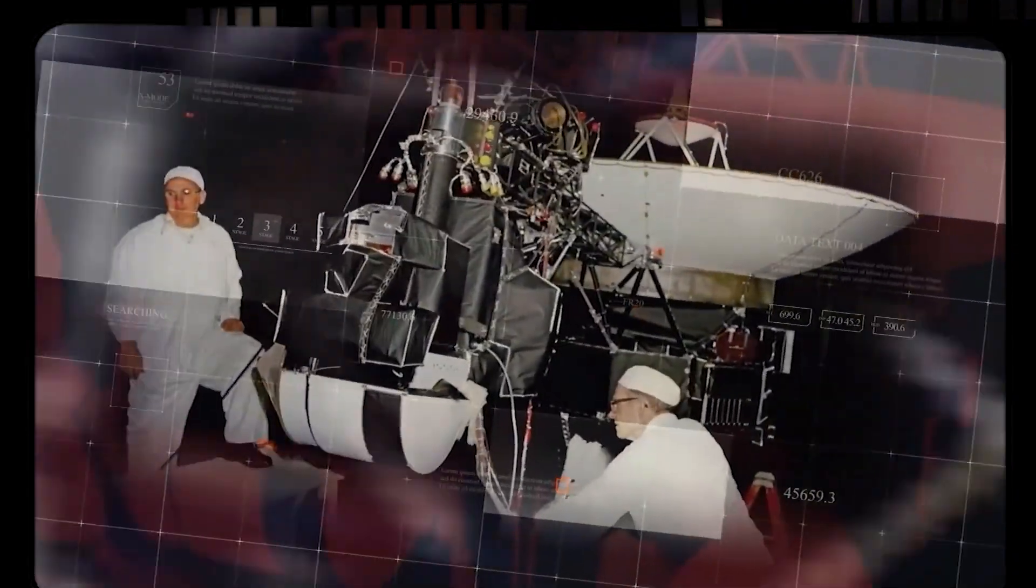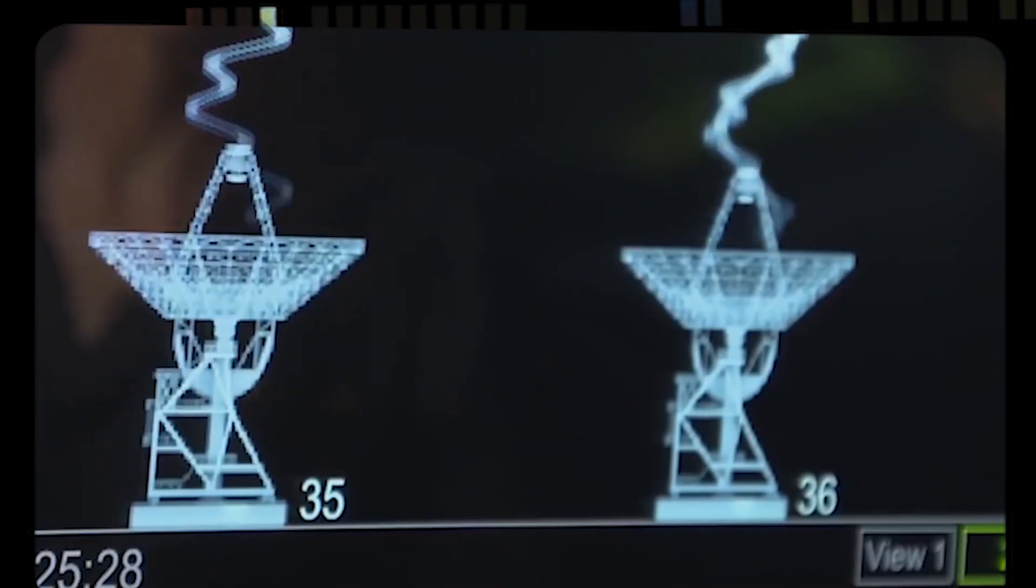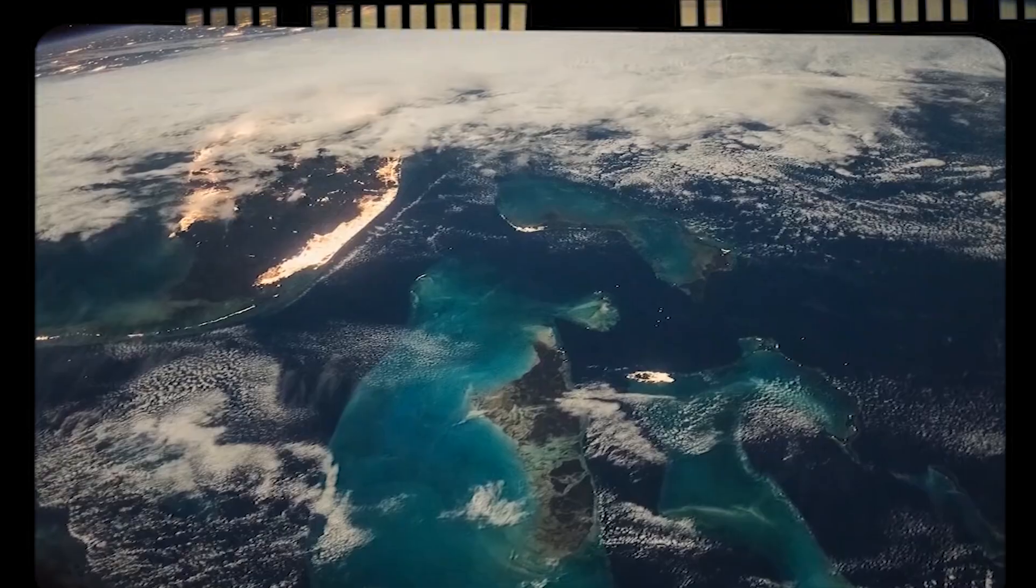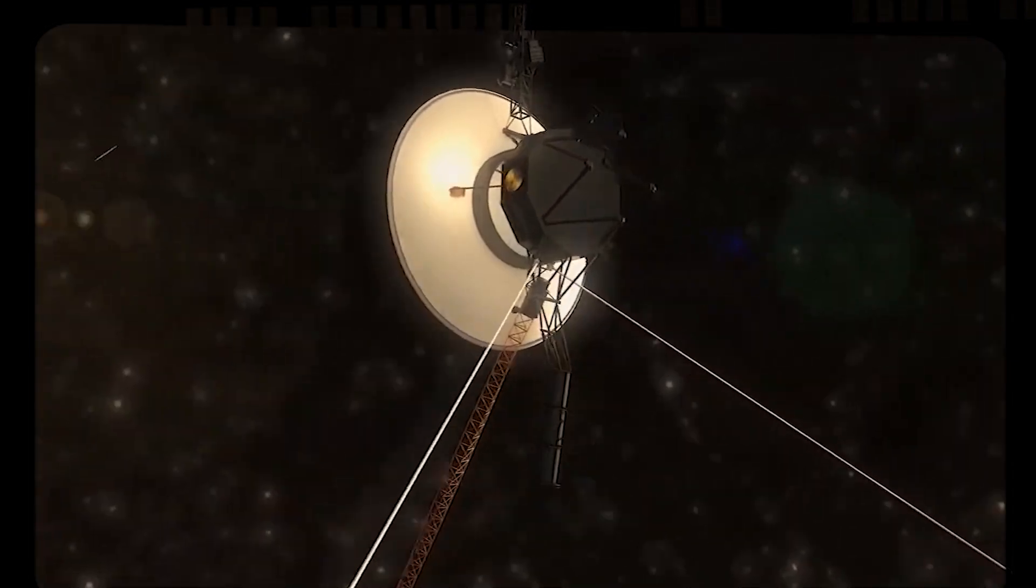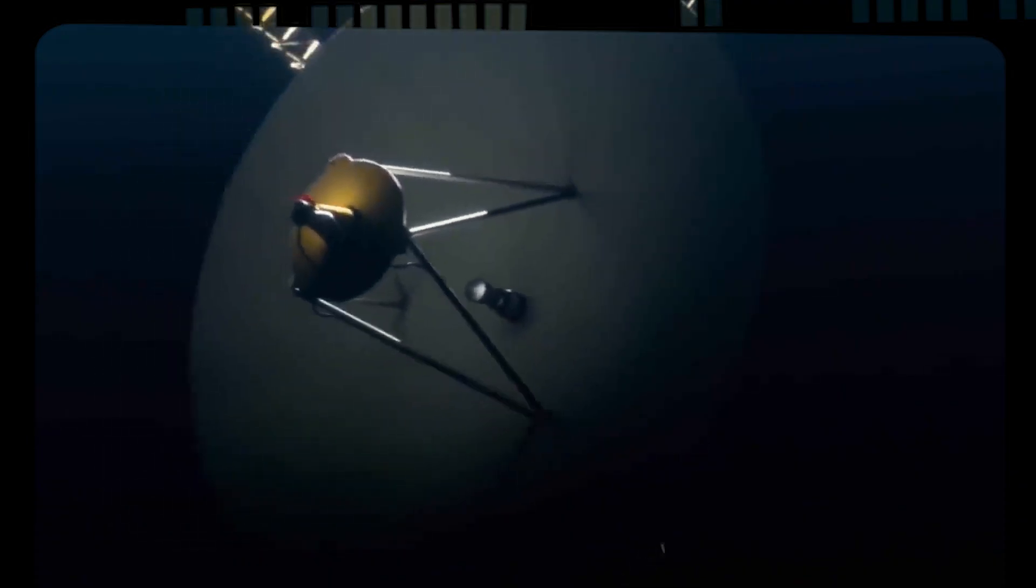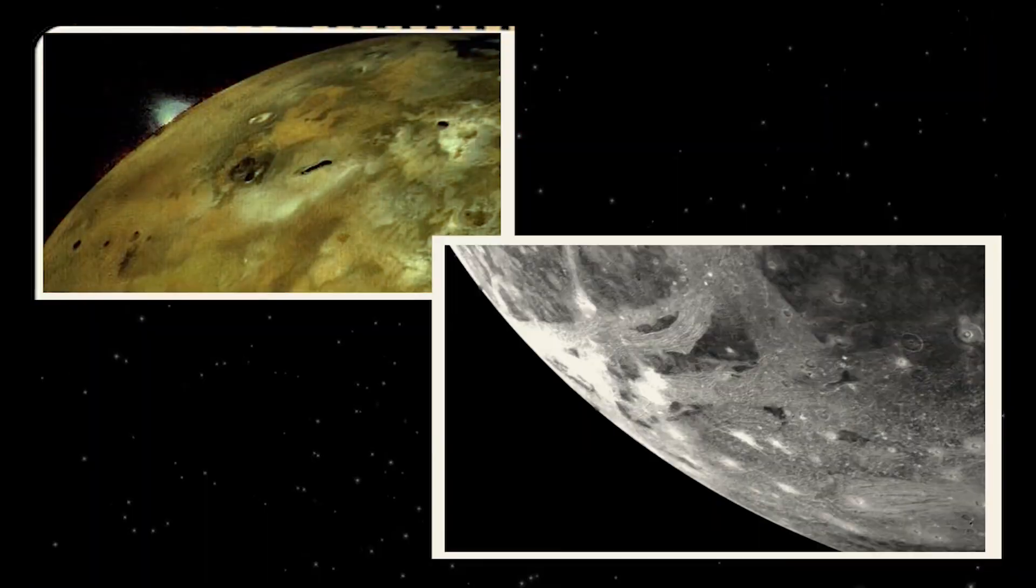By 1980, Voyager 1 had completed its primary mission, providing unprecedented insights into the atmospheres and compositions of Jupiter and Saturn, as well as their moons and rings. The spacecraft's longevity, fueled by the endurance of its nuclear-powered systems, enabled it to continue its journey into uncharted territory.